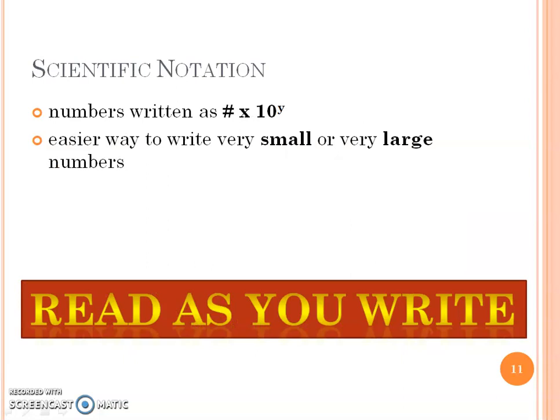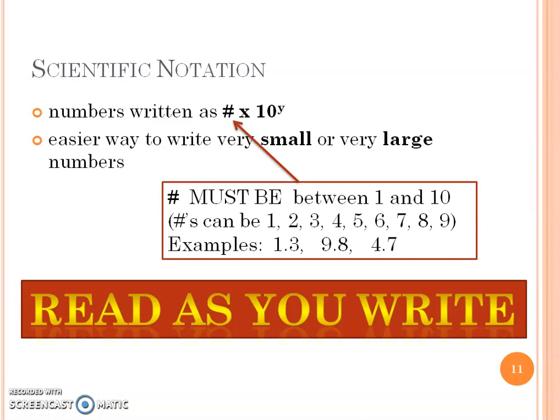So in scientific notation, again, read as you write. I'm going to go through this rather quickly, because you've already seen this on your summer assignment packet. So we want to remember that that number has to be between 1 and 10. In other words, the number can be 1, 2, 3, 4, 5, 6, 7, 8, or 9. So here are some examples of what that number is.